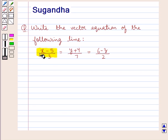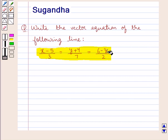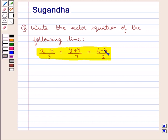The given equation is: x minus 5 upon 3 is equal to y plus 4 upon 7 is equal to 6 minus z upon 2. We are given this Cartesian equation of the line and we are supposed to find the vector equation of this line.